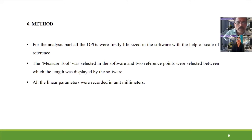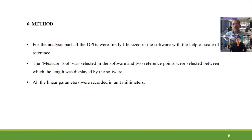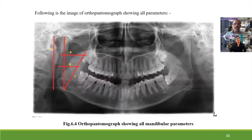For the analysis, all OPGs were life-sized in the software using a scale of reference. The marquee tool was selected and two reference points were chosen between which the length was displayed by the software; all linear parameters were recorded in millimeters. The OPG shows all five parameters studied: Point A is maximum ramus breadth, Point B is minimum ramus breadth, Point C is coronoid height, Point D is projective height of ramus, and Point E is condylar height.